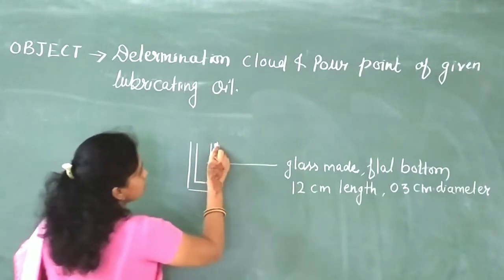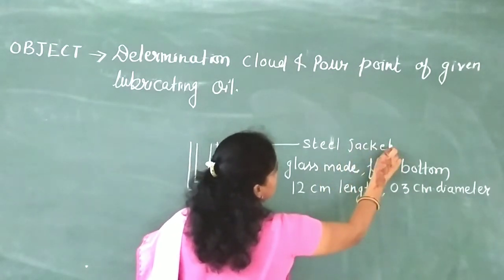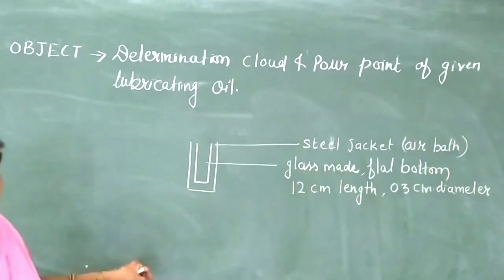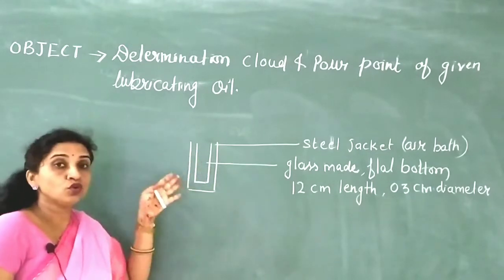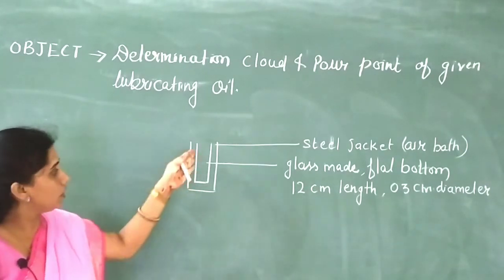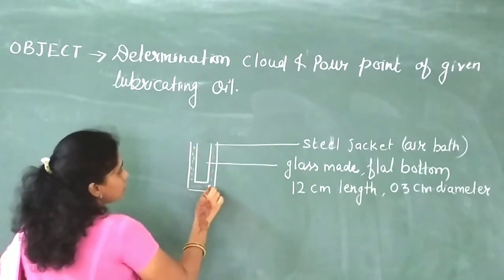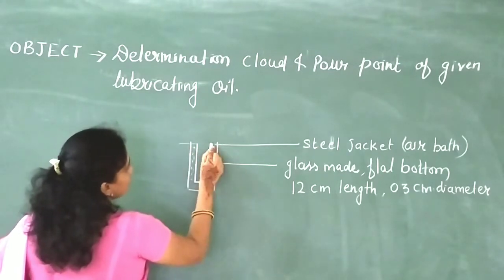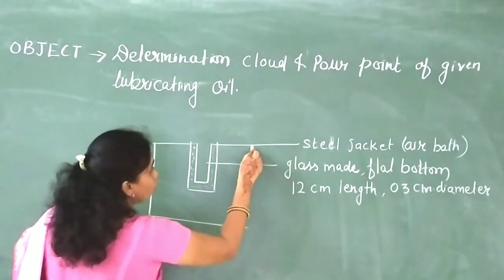The glass jar is inserted into a steel jacket. This steel jacket acts as an air bath — air is filled in the space of the steel jacket. Since air is a poor conductor of heat, when we want to cool the oil, we can maintain a very slow cooling speed using this steel jacket.